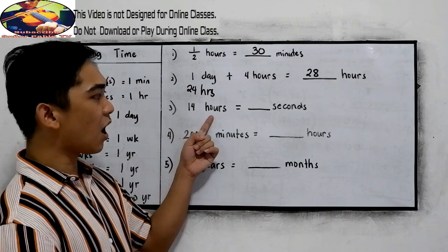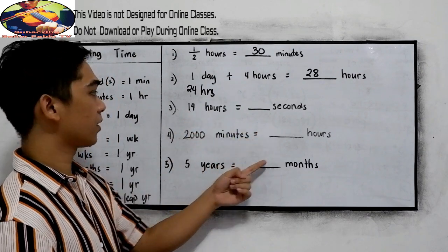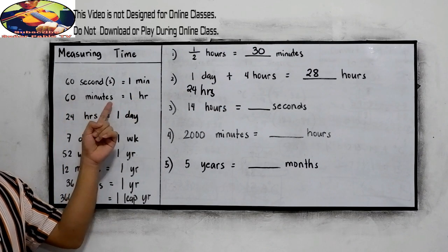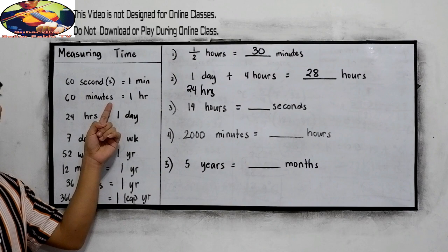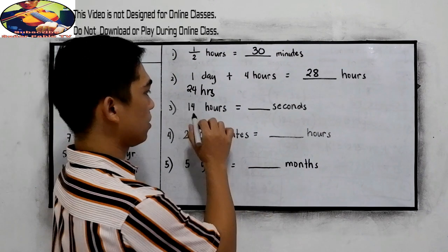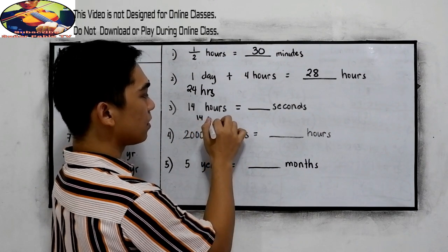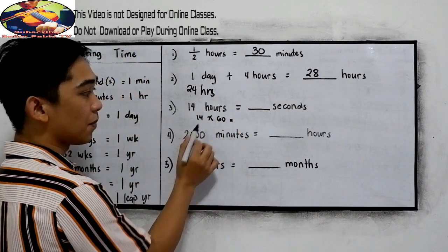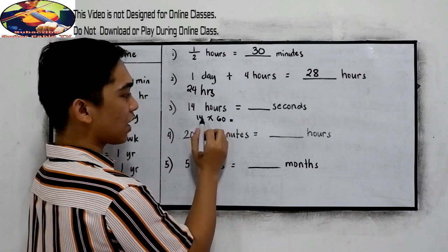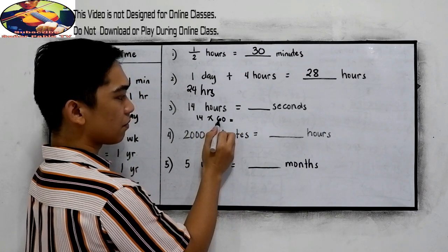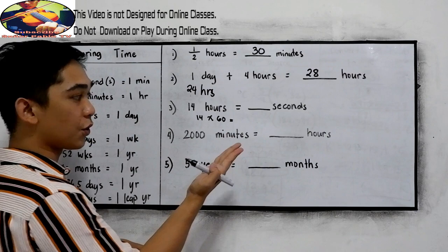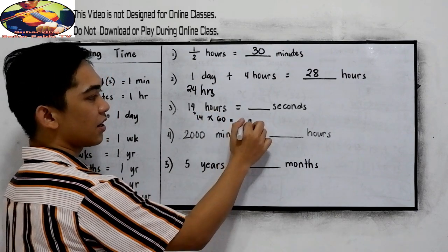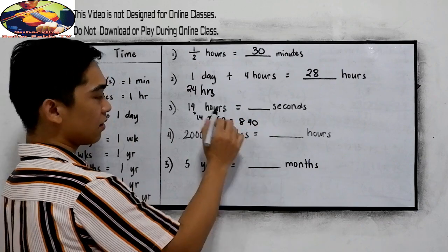Next, 14 hours to seconds. In 1 hour, we have 60 minutes. So let us first convert. 14 times 60. Multiplying. So 6 times 4, 24, 4 carry 2. 6 times 1 is 6, 7, 8. 840 minutes.